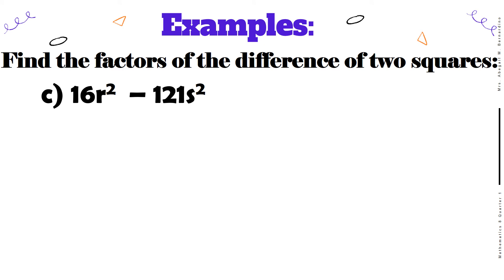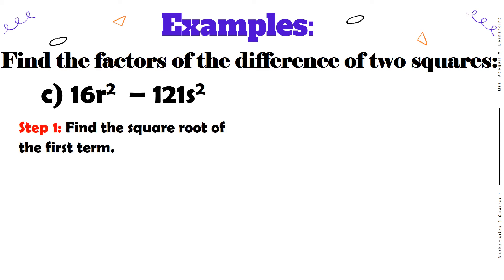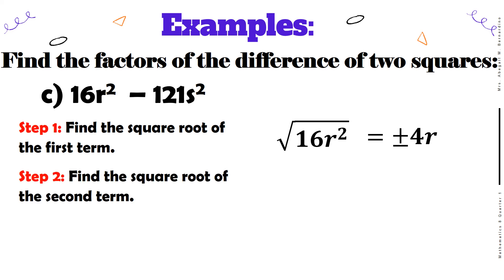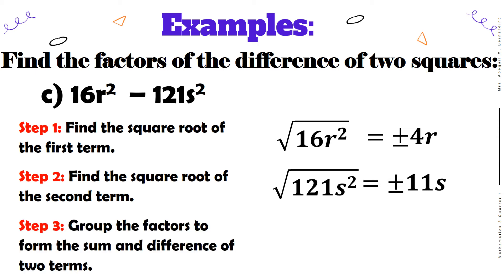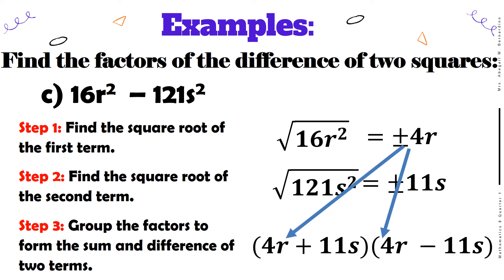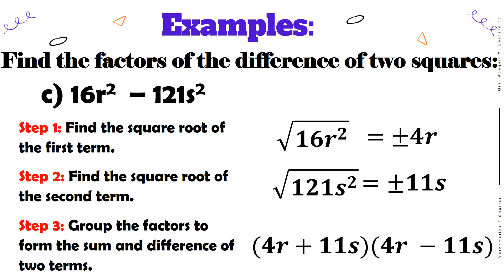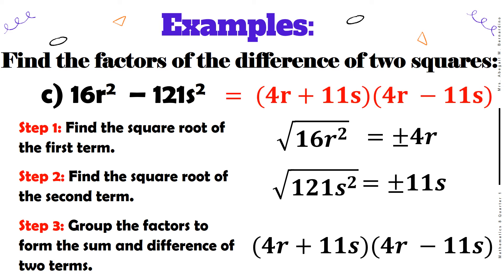For the third example, we have 16r squared minus 121s squared. Find the square root of the first term, 16r squared — the answer is positive or negative 4r. Next, find the square root of the second term, 121s squared — the answer is positive or negative 11s. For the third step, group the factors: the first terms of the binomials are 4r, and the second terms are 11s and negative 11s respectively. The final answer is the quantity 4r plus 11s times the quantity 4r minus 11s.